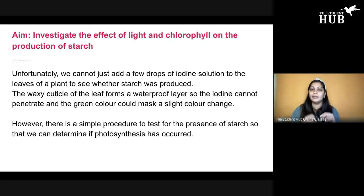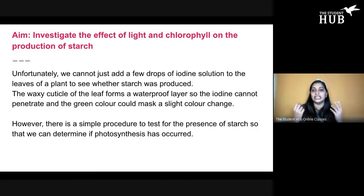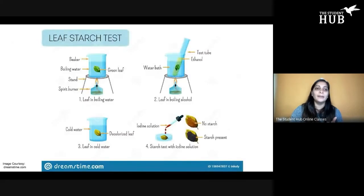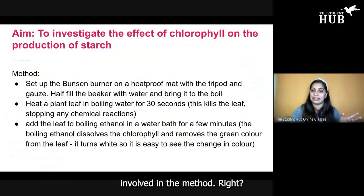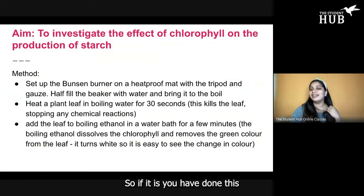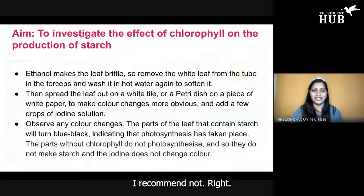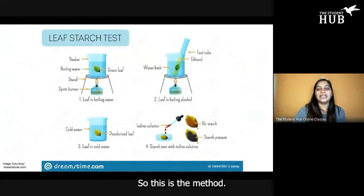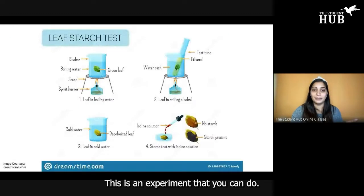Before we actually add iodine, there are a bunch of different steps we have to do first that will enable us to actually see the color change. This is basically the test we're going to do, and there are all these steps involved in the method. If it is that you have done this in school already, you'll be familiar with it. If CXC ever asks you to design an experiment to investigate whether photosynthesis has occurred in a plant, this is an experiment you could do.